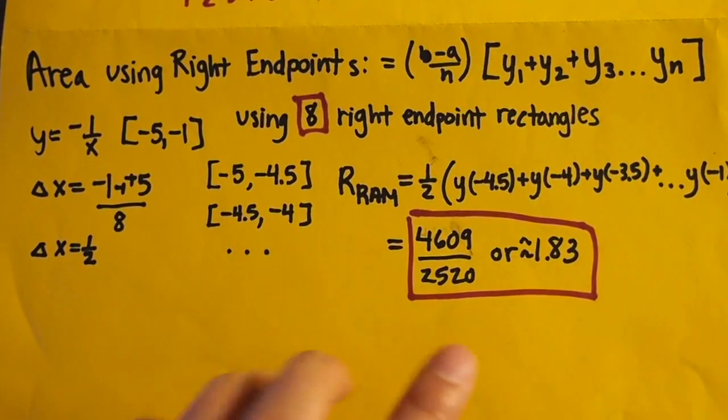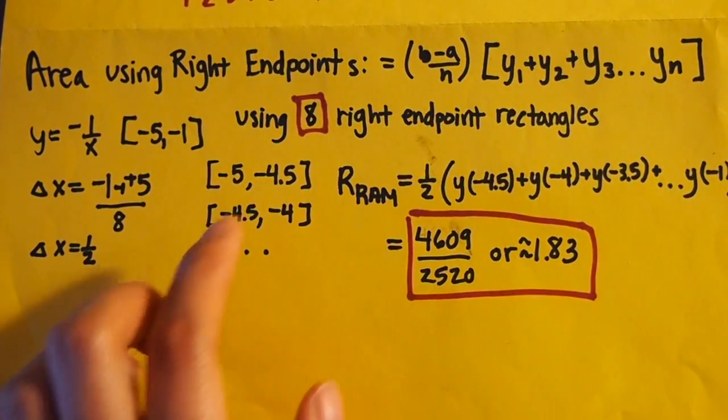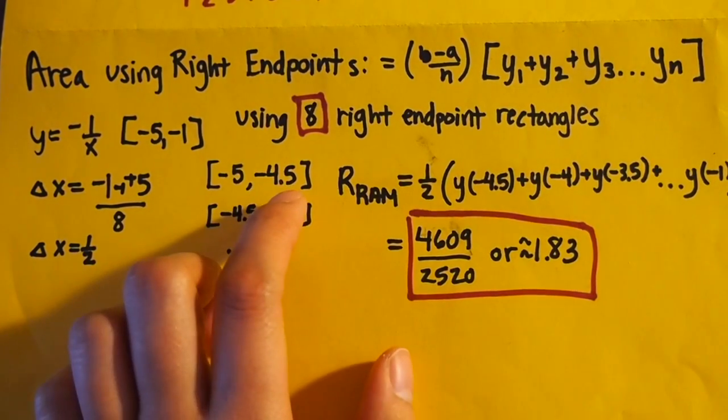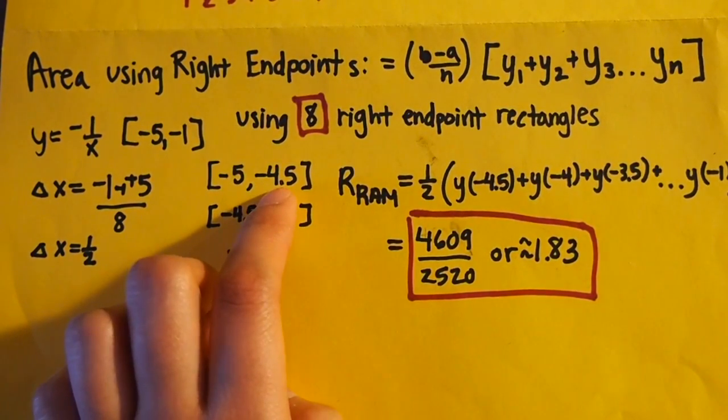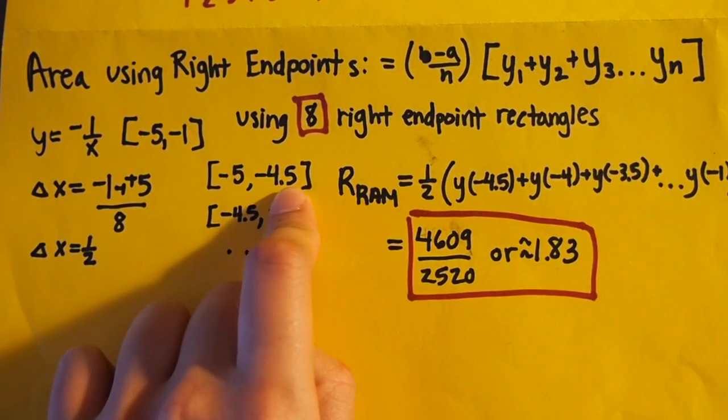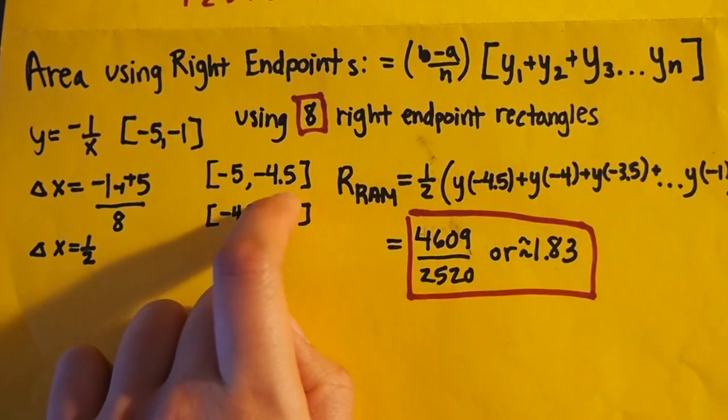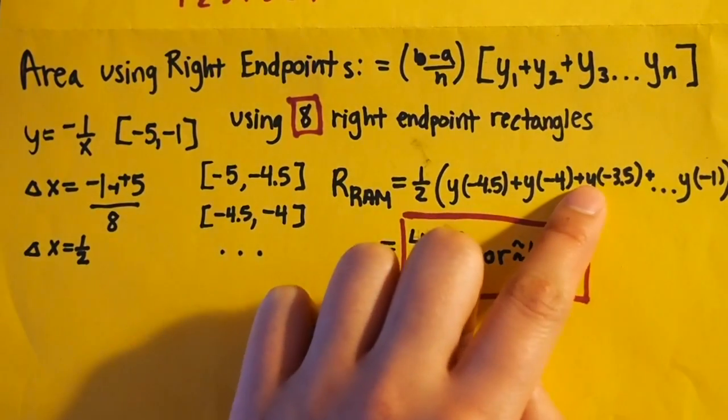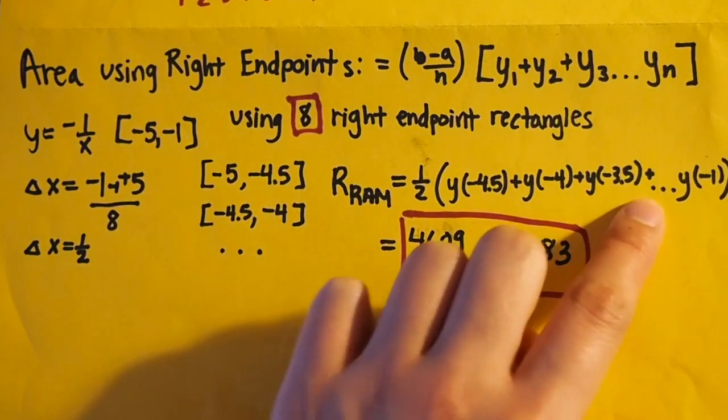Because you're using the right endpoints, and because the increment is 0.5, we'll be finding the y values of the right side. So it'd be negative 4.5, in increments of 0.5, negative 4.5, negative 4, y of the negative 3.5, and so on, all the way until y of negative 1.